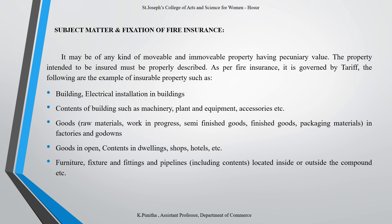Subject matter and fixation of fire insurance: It may be any kind of movable and immovable property having pecuniary value. The property intended to be insured must be properly described. As per fire insurance, it is governed by tariff. Examples of insurable property include: buildings; electrical installations in buildings; contents of buildings such as machinery, plant, equipment, accessories, etc.; goods including raw materials, work in progress, semi-finished goods, finished goods, packaging materials in factories and godowns; goods in open; contents in dwellings, shops, hotels, etc.; furniture, fixtures and fittings; and pipelines including contents located inside or outside the compound.